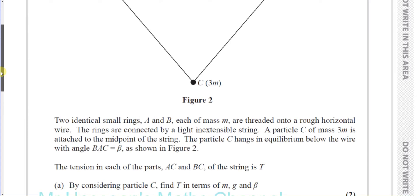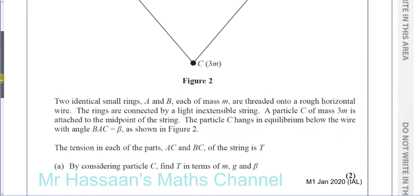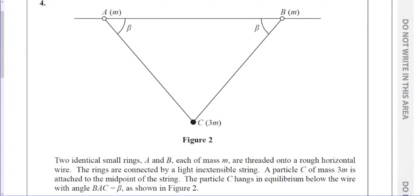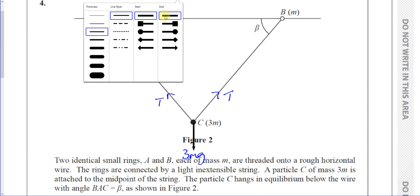By considering particle C, find T in terms of M, G, and beta. Let's put some forces on the diagram. We have the weight of 3MG Newtons acting straight down, and then the tension T in the string on both sides. We need to determine some angles, so I'm going to draw a horizontal line to help figure that out.